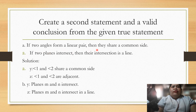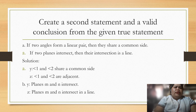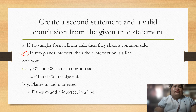Another example: if two angles form a linear pair, then they share a common side. Linear pairs are usually 180 degrees when combined. Therefore angle 1 and angle 2 share a common side, and angle 1 and angle 2 are adjacent. Also, if two planes intersect, then their intersection is a line. Plans M and N intersect, therefore planes M and N intersect in a line.